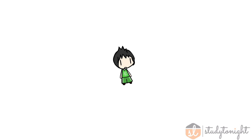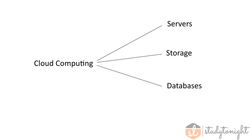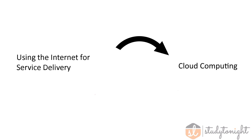Before we dive in, let's have a look at what cloud computing is. Simply put, cloud computing is the delivery of computing services — stuff like servers, storage, databases, and much more — over the internet. When we use the internet to achieve this task, we call it using the cloud. Using a cloud means simply using the internet.